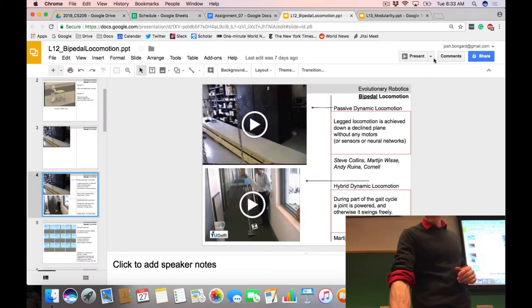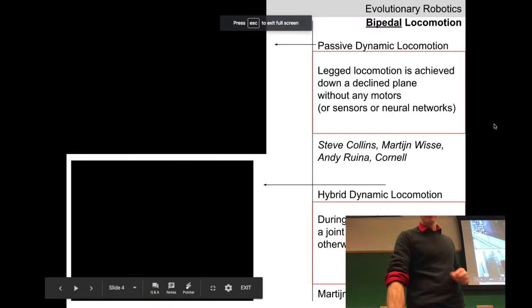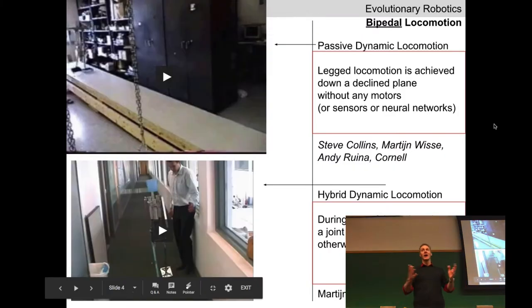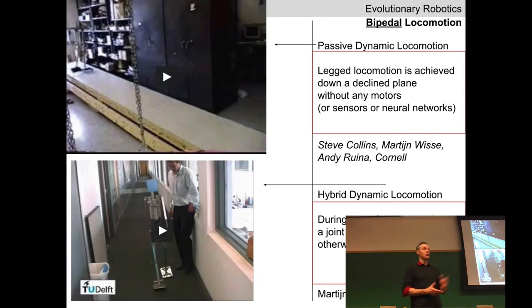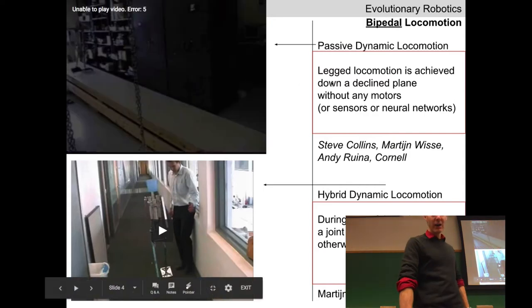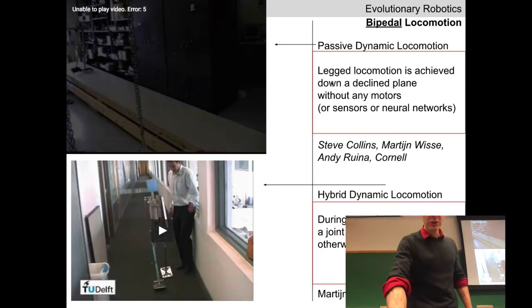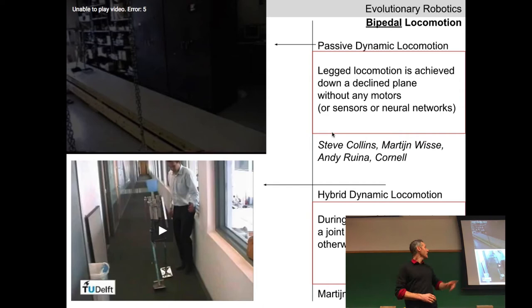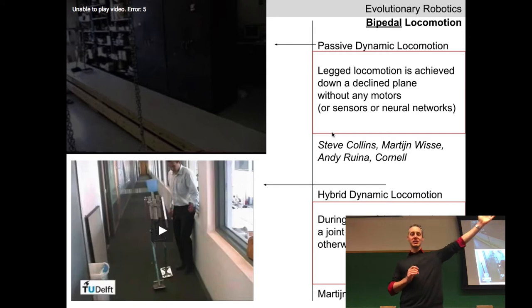Back to Lecture 12: bipedal locomotion. Like any form of locomotion, the robot is trying to strike a balance between speed, energy efficiency, robustness, and stability. Last time we introduced passive dynamic locomotion — a purely mechanical device with no electronics, no sensors, and no motors, so it's infinitely energy efficient, converting potential energy at the top of a declined plane into kinetic energy.